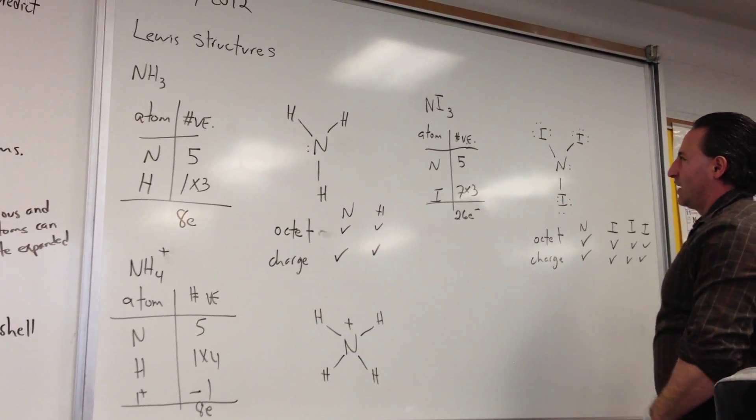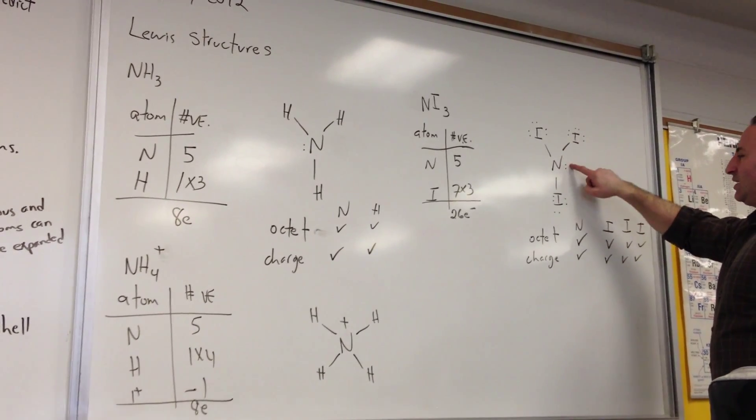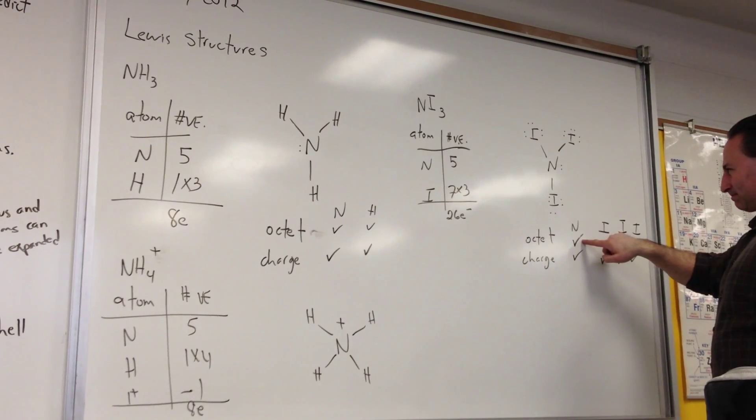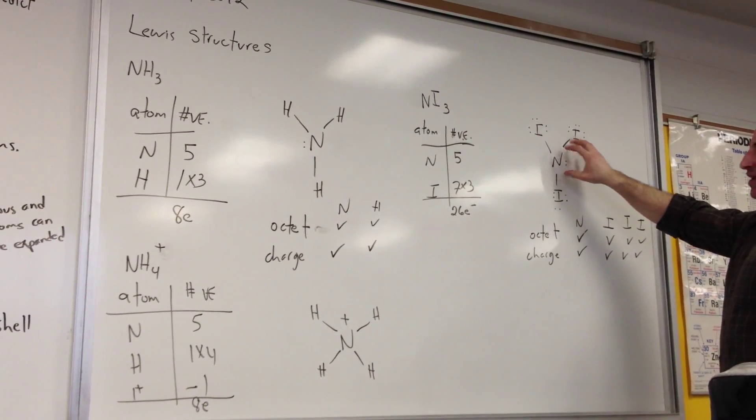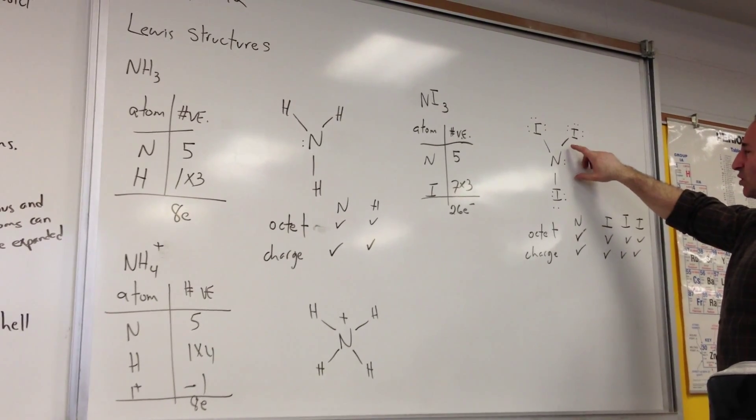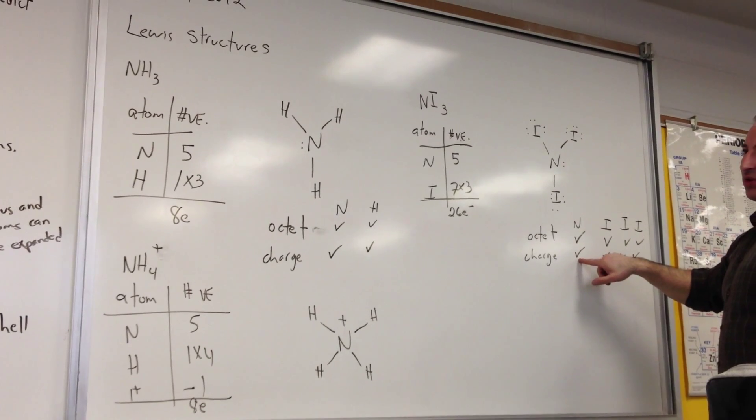Now let's check for octet requirements. We'll start with nitrogen. Nitrogen has 2, 4, 6, 8, so its octet requirement is met. As regarding charge, nitrogen likes to have possession of 5 electrons. So it possesses 1, 2, 3 plus the 2 here, that's 5. So its charge requirement is met.